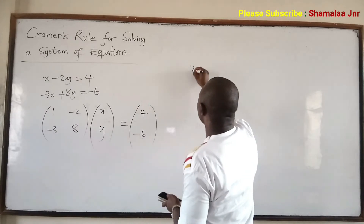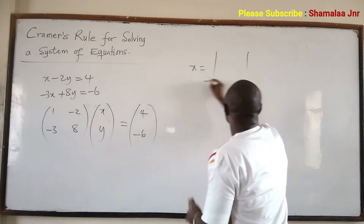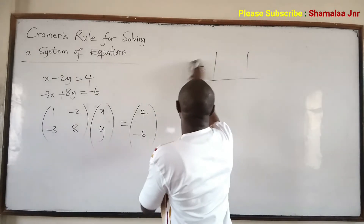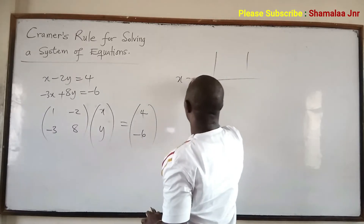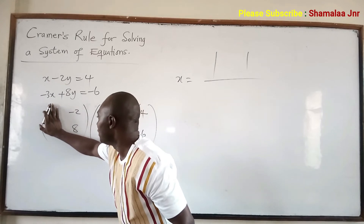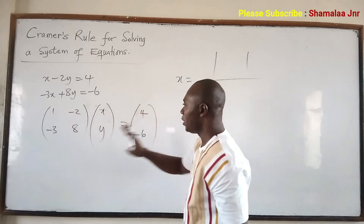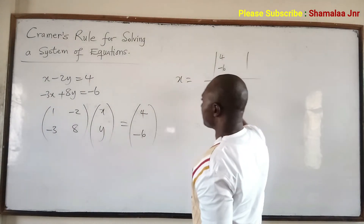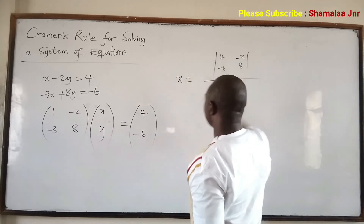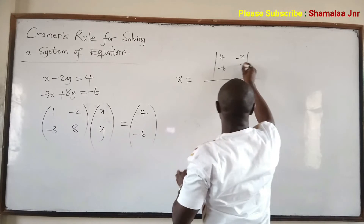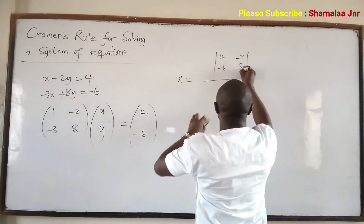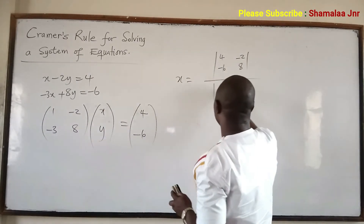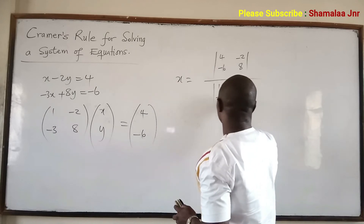Using Cramer's rule to find x: because we are finding the value of x, we replace the x-column with the right-hand side values. So the numerator matrix has 4, negative 6 in the first column and negative 2, 8 in the second column. We are not changing negative 2 and 8 because we are solving for x. Divide by the determinant of the original matrix: 1, negative 2, negative 3, 8.